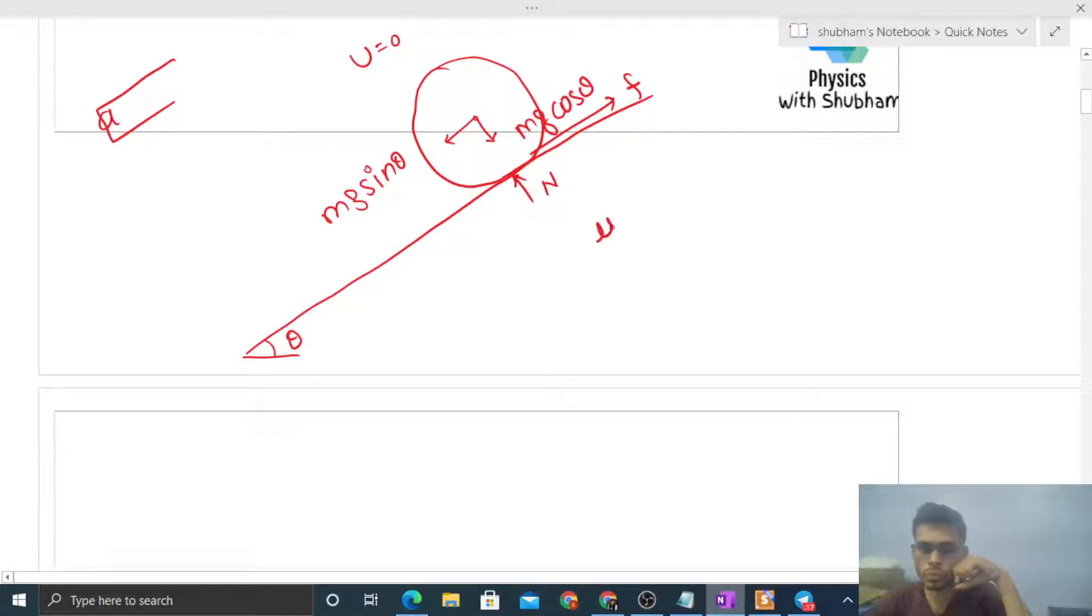If mu is equal to 2/7 of tan theta, this is the minimum value of mu for which rolling is possible. If it is the minimum value of mu, then friction force is limiting and this sphere will be pure rolling. It means parallel to the inclined surface, linear acceleration a, and the center of mass will rotate with some angular acceleration alpha, so that a is equal to r into alpha is valid.